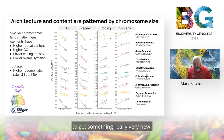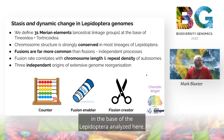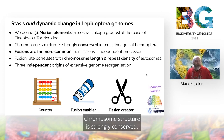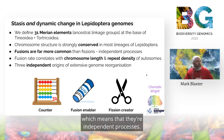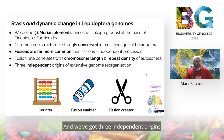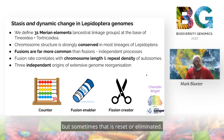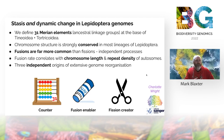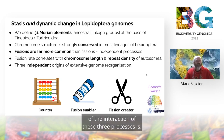So these reference genomes allow us to get something really new. We have 31 Merian elements at the base of the Lepidoptera analyzed here. Chromosome structure is surprisingly and conserved. Fusions are more common than fissions, despite the modal number being 31, which means they're independent processes. The fusion rate correlates with repeat density and chromosome length. We've got three independent origins of extensive genome rearrangement, which will allow us to distinguish between three processes: there's an abacus that counts usually to 31 but is sometimes reset; there's something that enables fusions; and there's something that generates fissions. I'm really excited, as is Charlotte, to work out the biology and evolutionary implications of the interaction of these three processes.